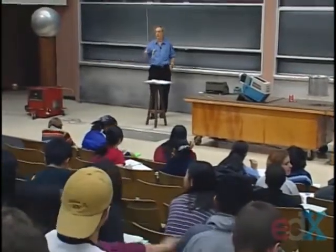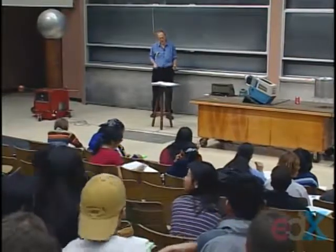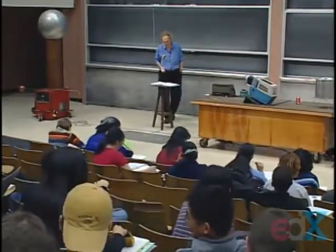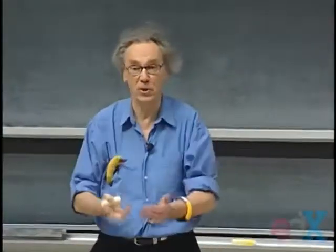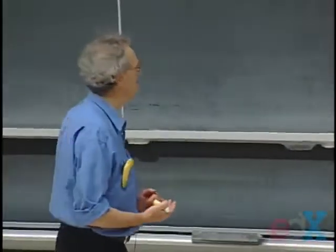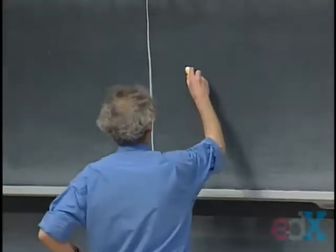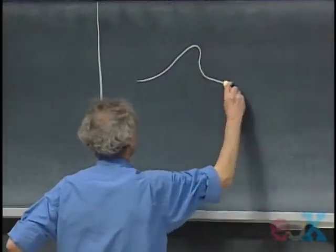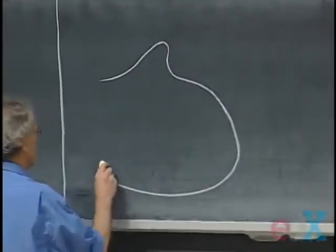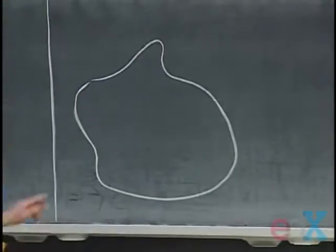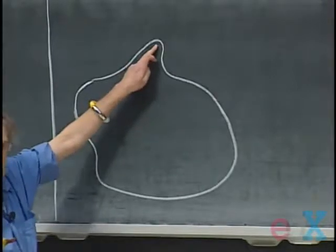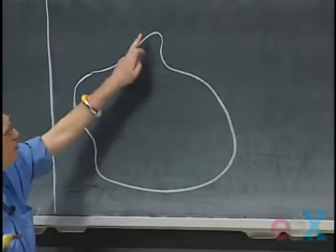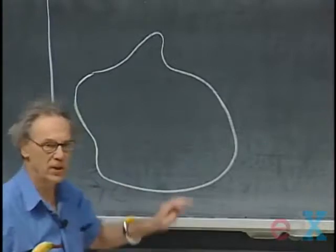Last time I mentioned that charge resides at the surface of solid conductors, but it is not uniformly distributed — unless it happens to be a sphere. If I had a solid conductor with this shape, I'm going to convince you today that the surface charge density will be higher here where the curvature is stronger than it is there.